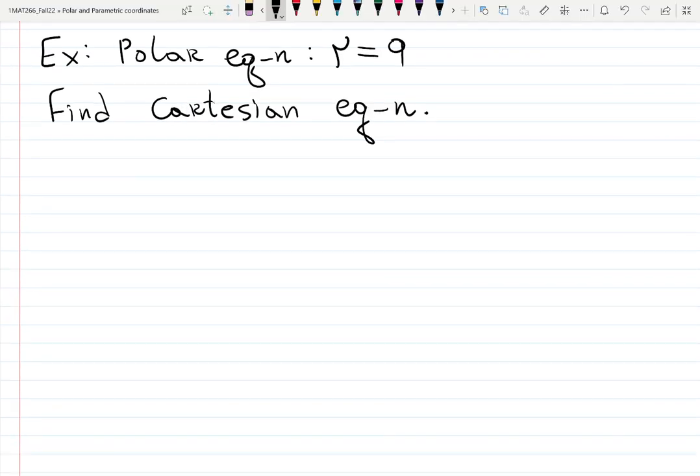Jumping from polar to Cartesian, now using equations. R equals 9. Can you guess how does R equals 9 look like?